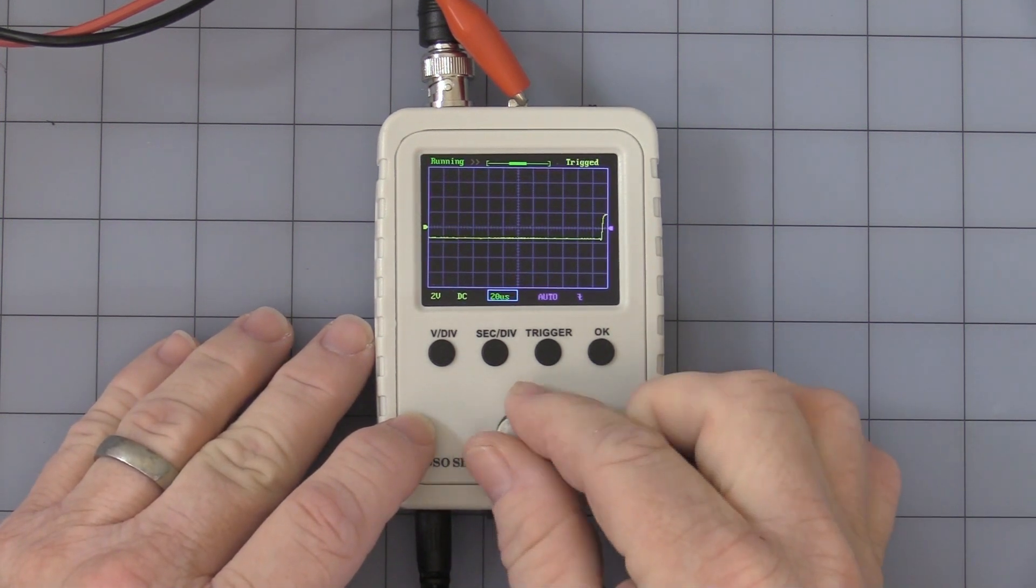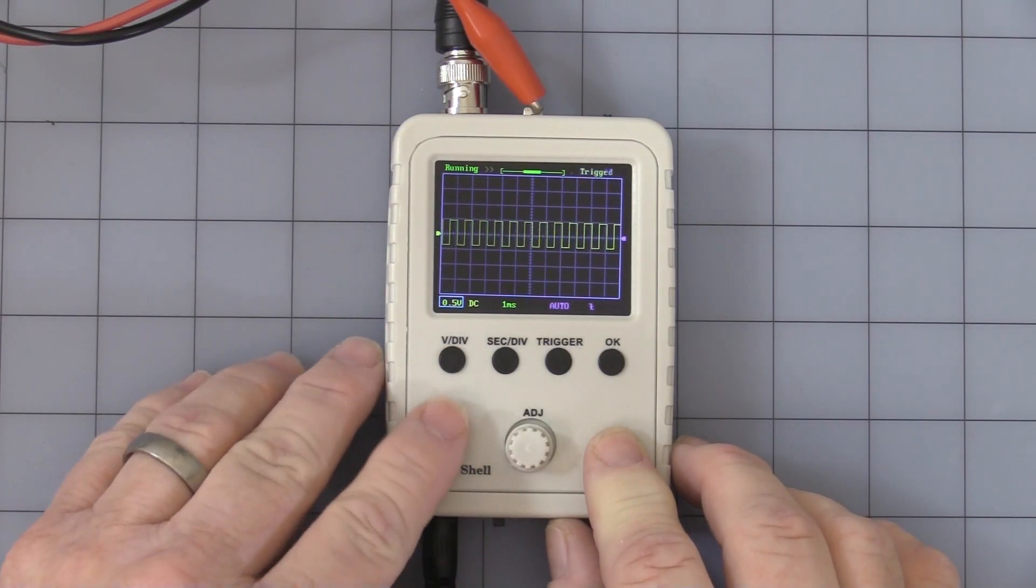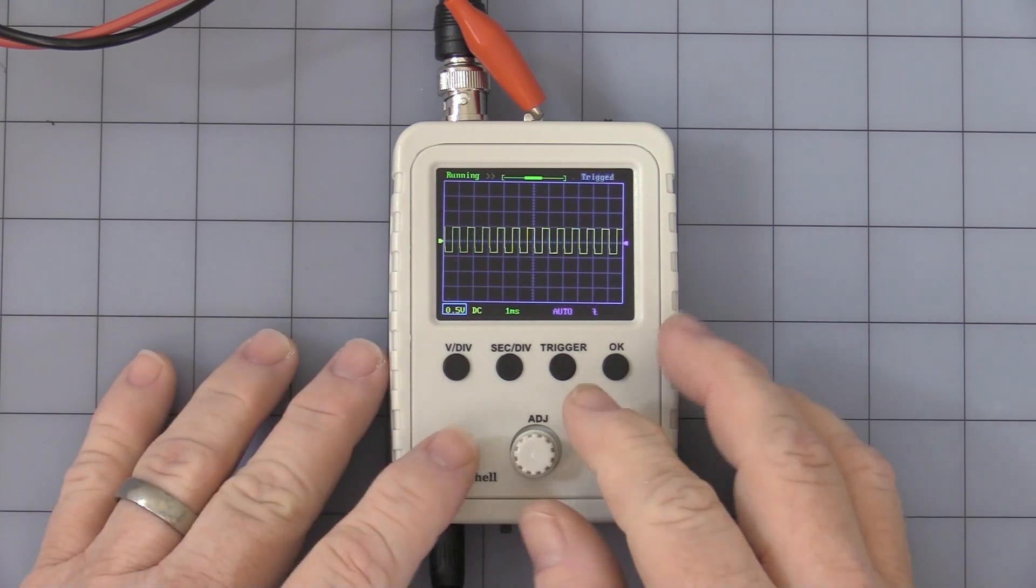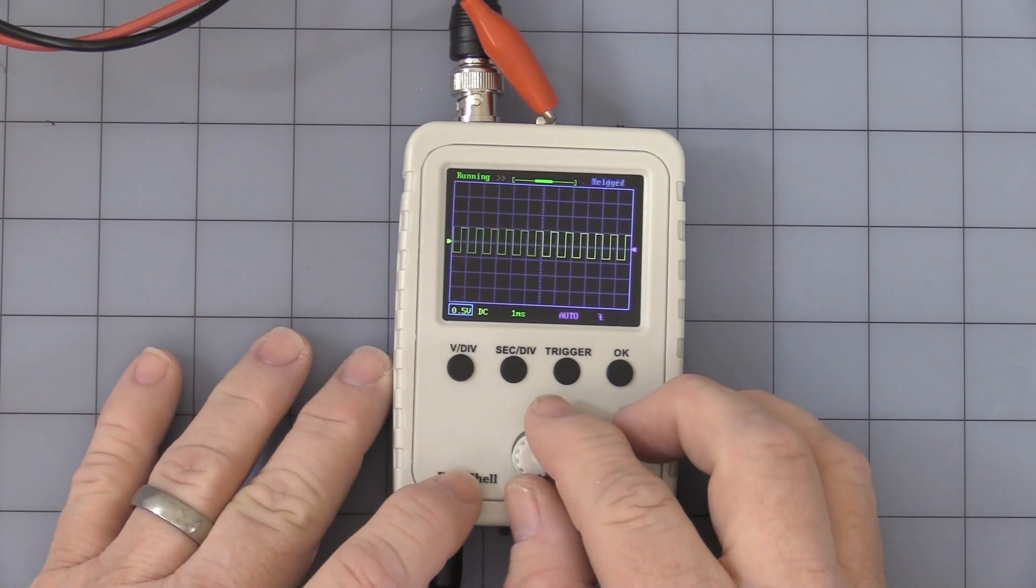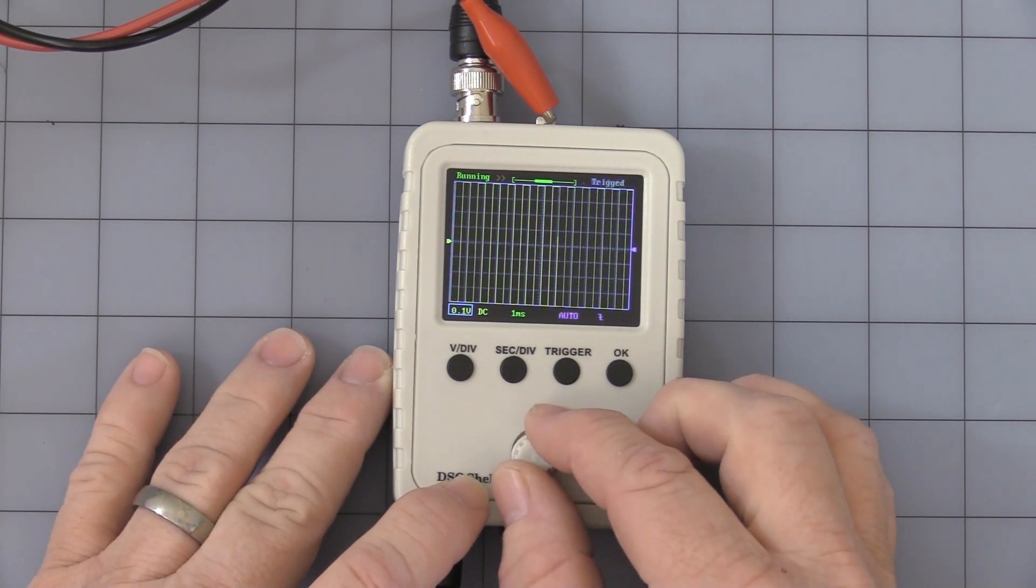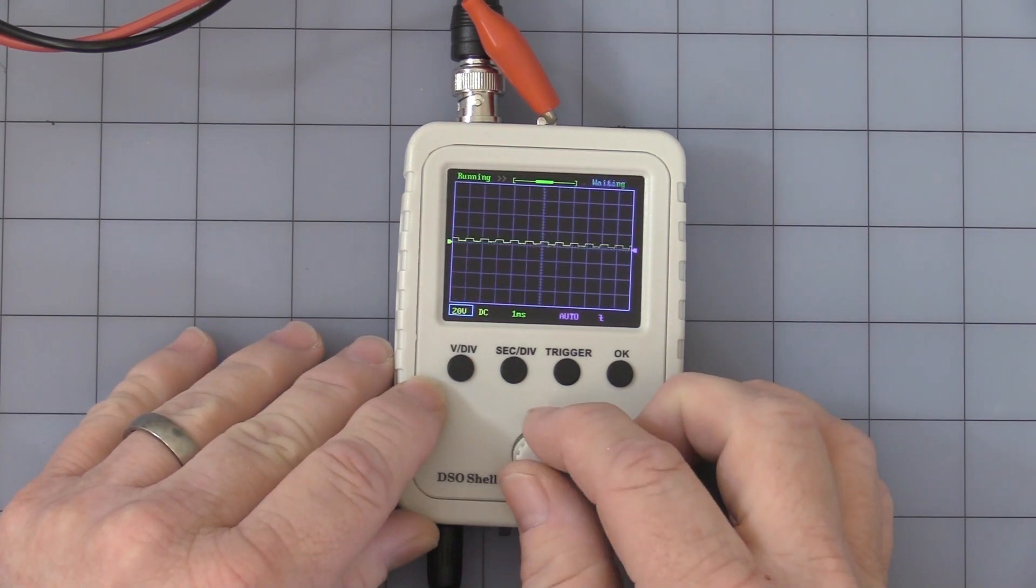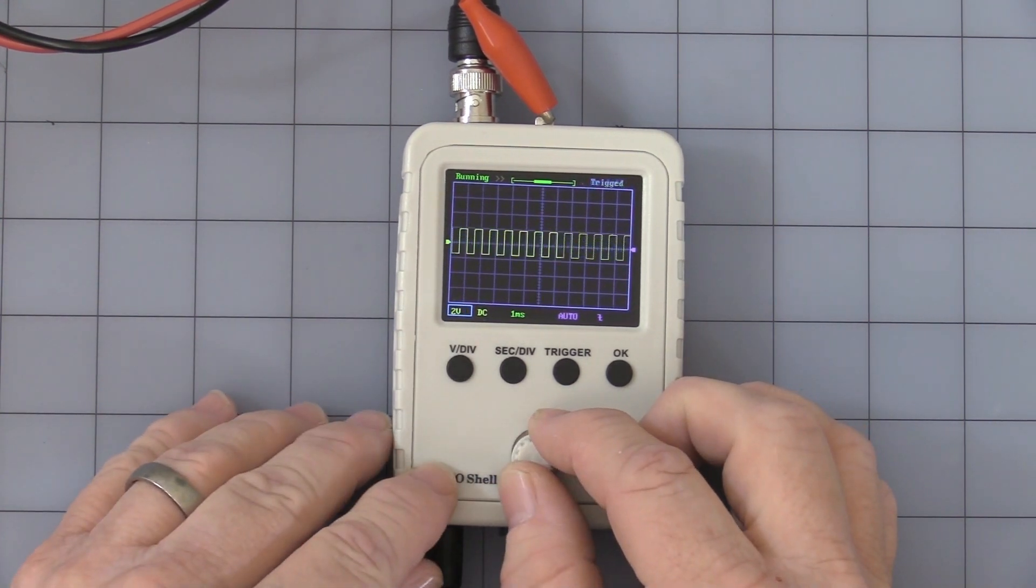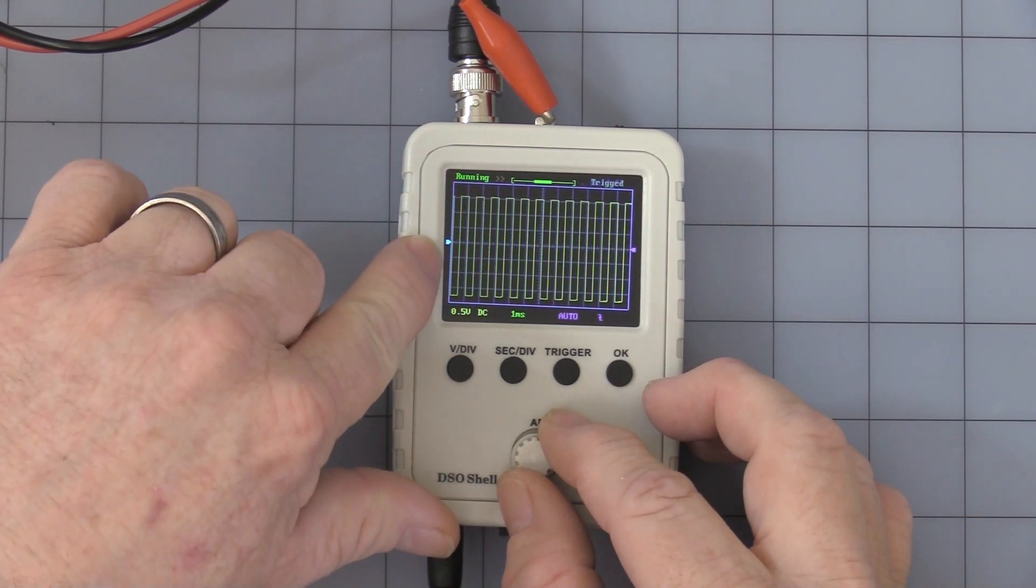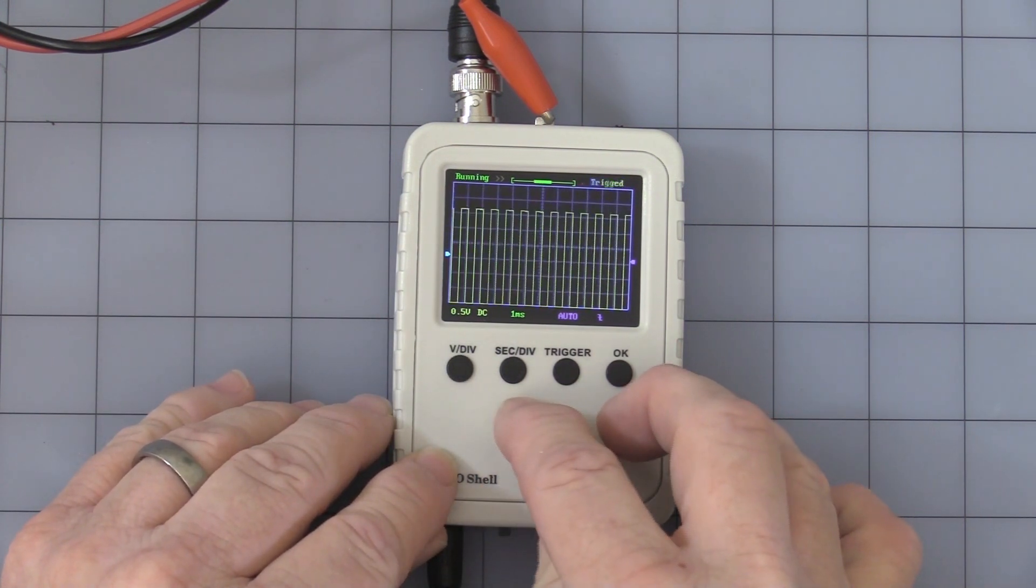So the first button is your voltage division. It allows you to set between five millivolts all the way up to 20 volts. You press it again and you see this arrow turns blue. That allows you to set the vertical adjustment on it.